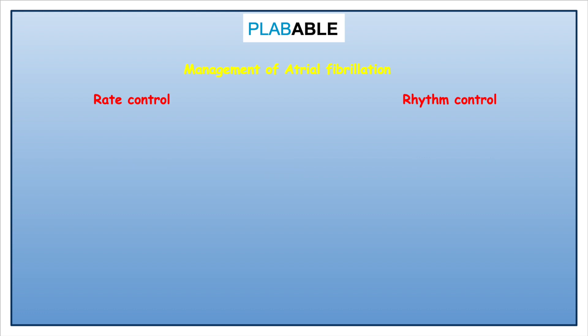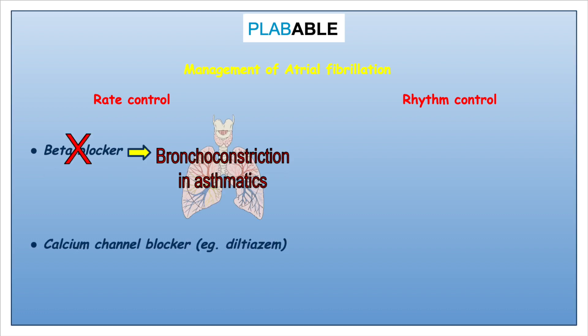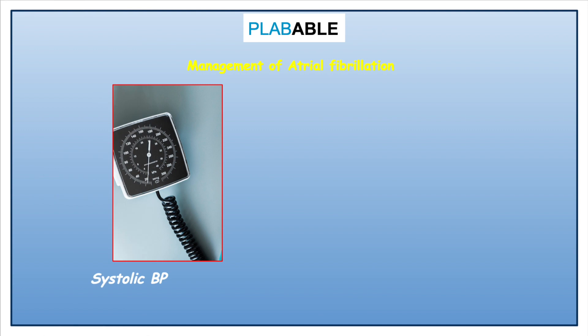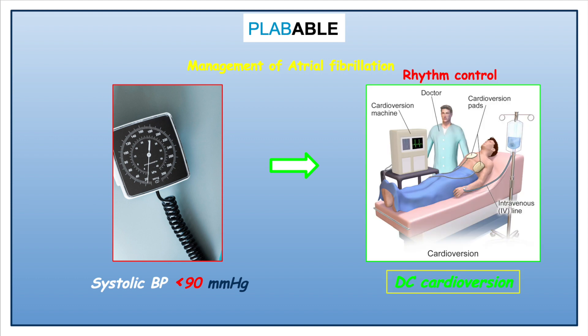For rate control, a beta blocker or a rate-limiting calcium channel blocker — for example, diltiazem — is used as first line. A common contraindication for beta blockers is asthma, so we offer those patients a calcium channel blocker instead. We need to remember that digoxin is the preferred choice if the patient has co-existent heart failure. If the patient at presentation is hemodynamically unstable — that is, systolic blood pressure less than 90 mmHg — then we go for immediate DC cardioversion.